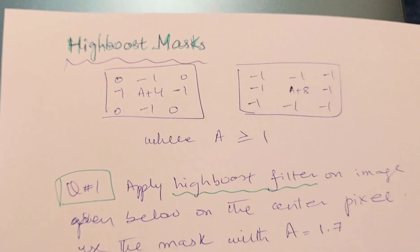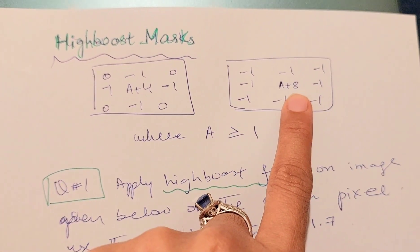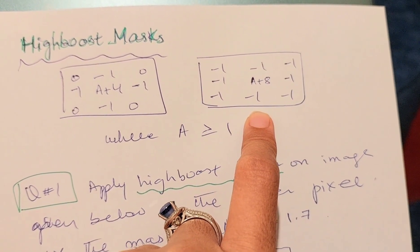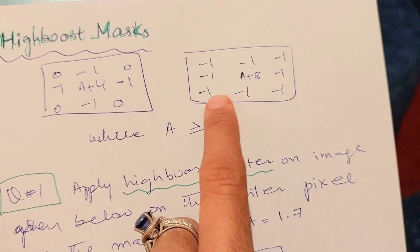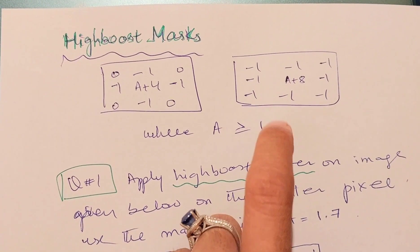In high boost mask, we have this component A+4 or A+8 in the middle, and it is surrounded by negative pixels on four neighbors. Sometimes it is surrounded by negative pixels on eight neighbors. Both these types of high boost masks can be provided.